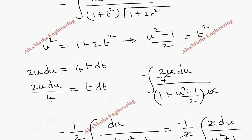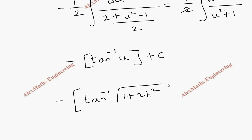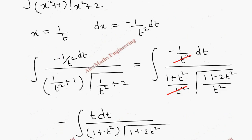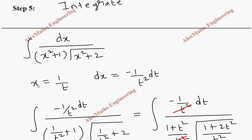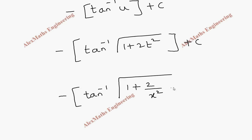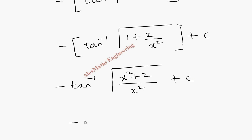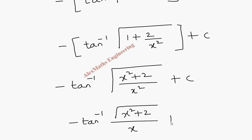We replace u: u is root of 1 plus 2t². So the result is minus tan inverse of root of 1 plus 2t² plus c. Since t equals 1 by x, replacing t gives minus tan inverse of root of 1 plus 2 by x² plus c. Simplifying, the final answer is minus tan inverse of root of x² plus 2 divided by x, plus c.